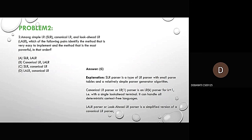Problem 2: Among SLR, canonical LR, and look-ahead LR (LALR), which pair identifies the easiest to implement and the most powerful, in that order? Options: A — SLR, LALR; B — canonical LR, LALR; C — SLR, canonical LR; D — LALR, canonical LR. The correct answer is C. SLR is easiest to implement due to its small parse table and simple algorithm. Canonical LR (LR(1)) is the most powerful as it handles all deterministic context-free languages with a single look-ahead terminal.